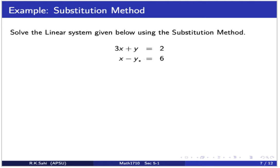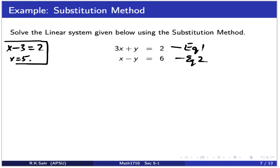In the substitution method, you have to write one variable in terms of the other. If I have an equation with only one variable, I can easily solve for it. So what we do is take one of the equations, write one variable in terms of the other, and then substitute that value into the other equation. It doesn't matter which variable you write in terms of the other, or which equation you take it from — it's all in your hands.